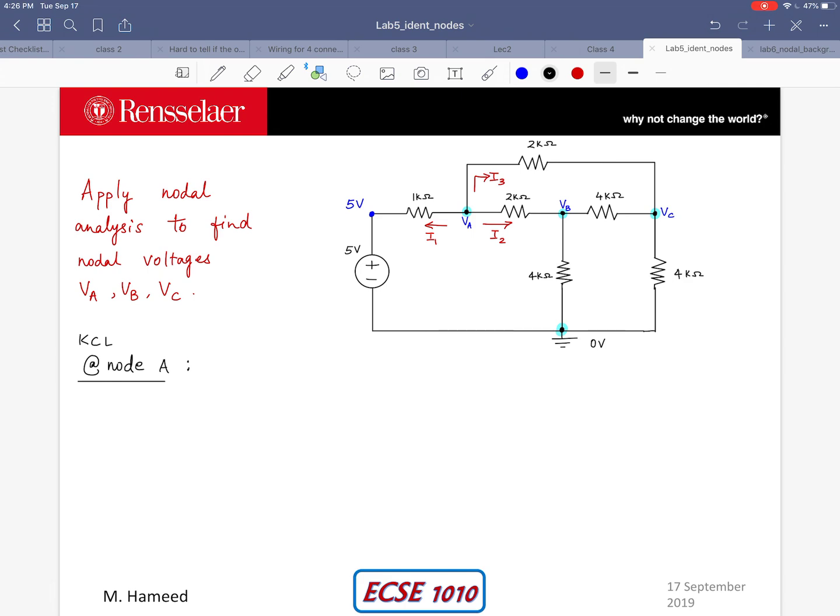So for node A I have I1 which I can find as VA minus 5 divided by 1 kilo ohm or I will just write 1000 to make it easy. I got I1 as VA minus 5 divided by 1000 and I'm assuming that current is entering the positive terminal here and the voltage drop is that way.